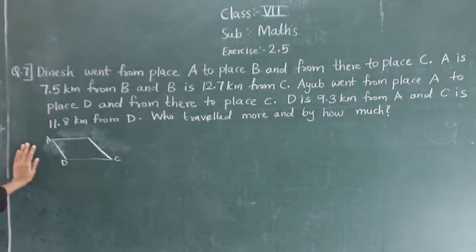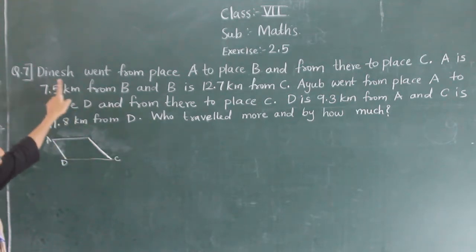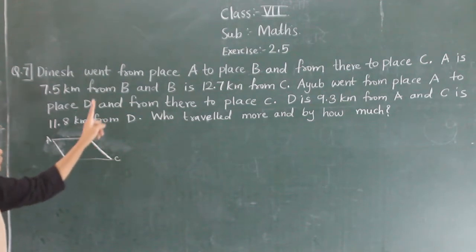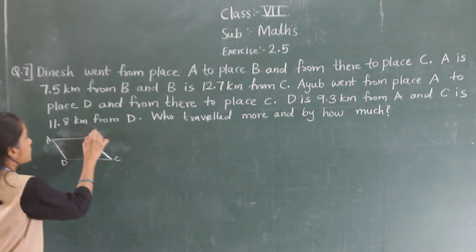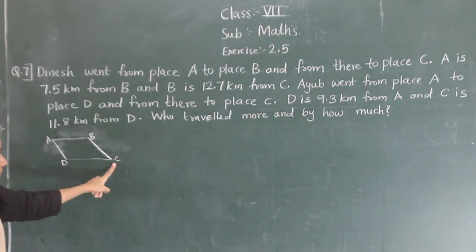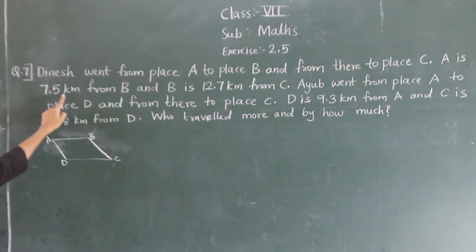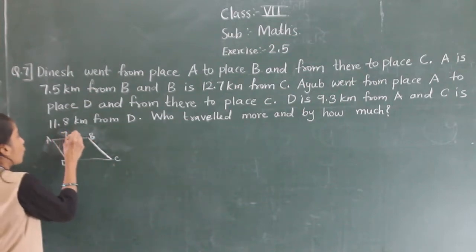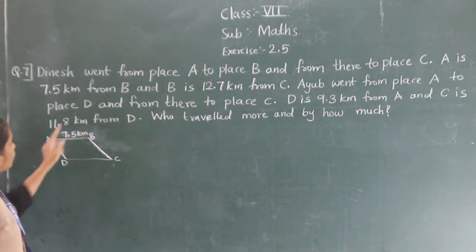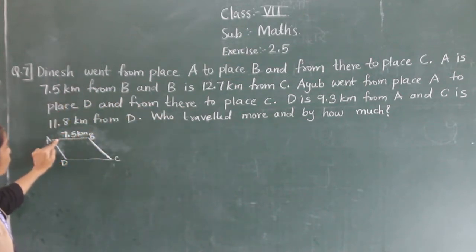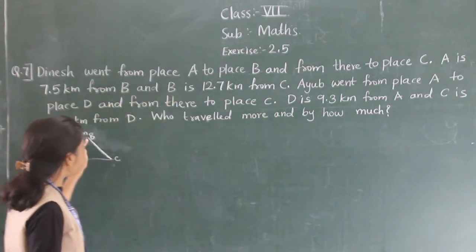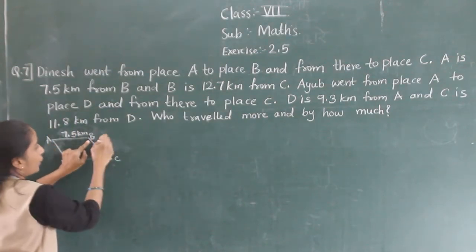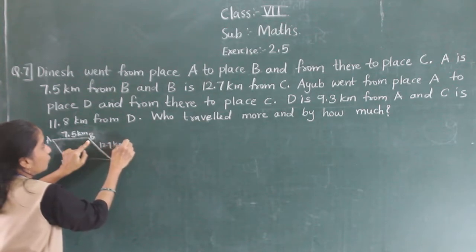Dinesh went from place A to place B, and from there to place C. A is 7.5 km from B, and B is 12.7 km from C.